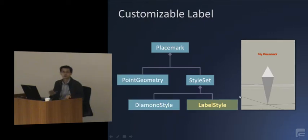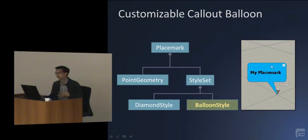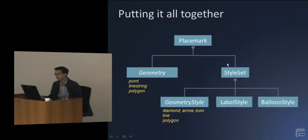Aside from the types, you can also customize the label by adding a label style to the style set. So in this case, I can change the color of the label. And lastly, you can also customize the look of the balloon that the user sees when he clicks the placemark. In this case, it's just changing the color. And if you put it all together, this is what you get.